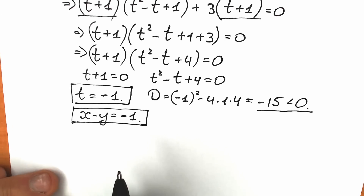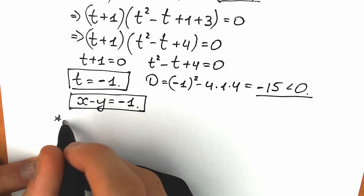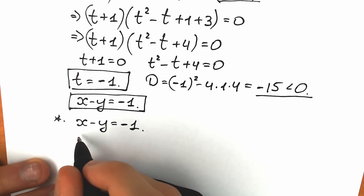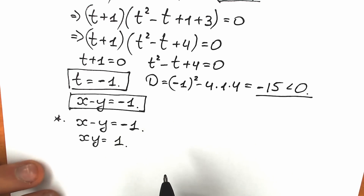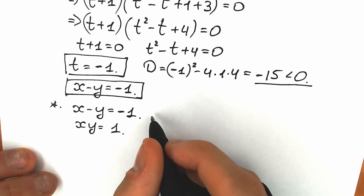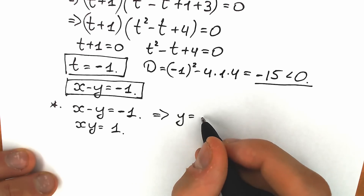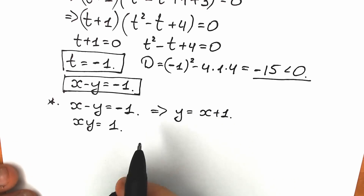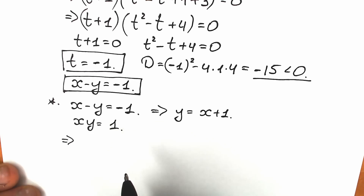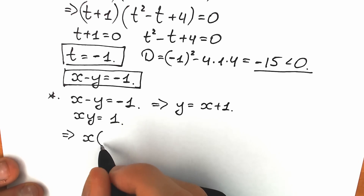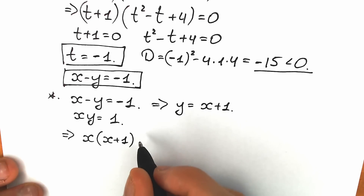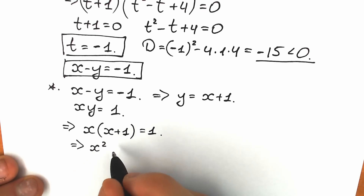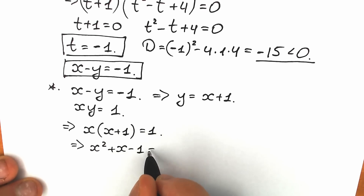Our final system of equations is: x − y = −1 and xy = 1. From the first equation, y = x + 1. Substituting into xy = 1: x(x + 1) = 1, which gives x² + x − 1 = 0.